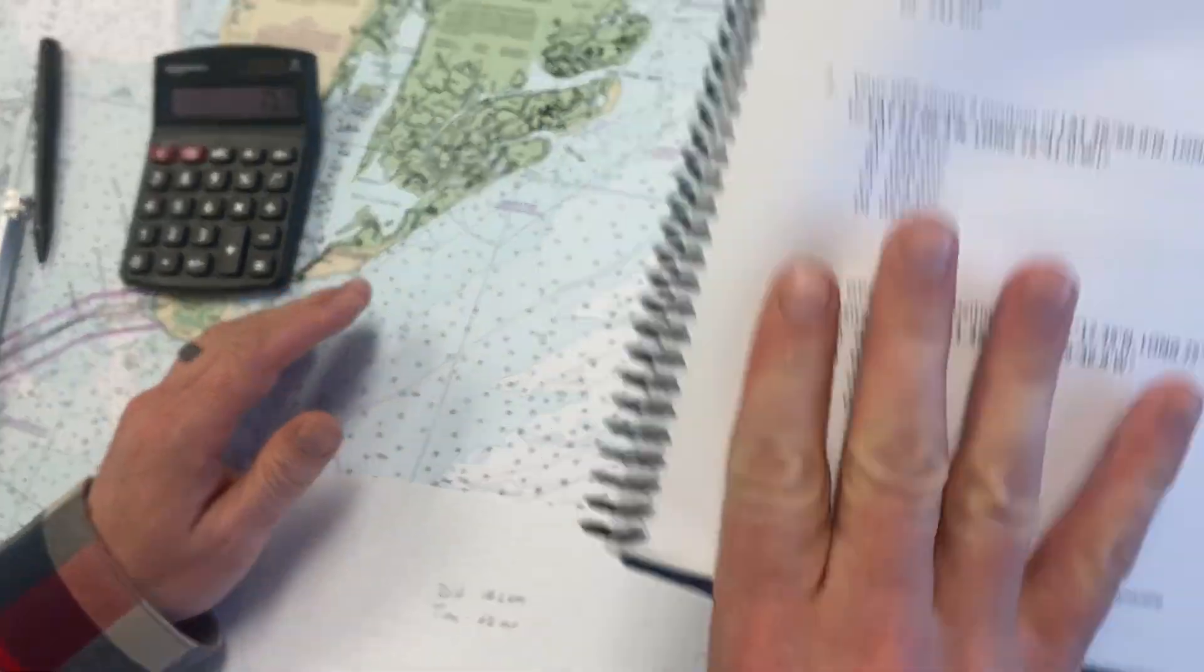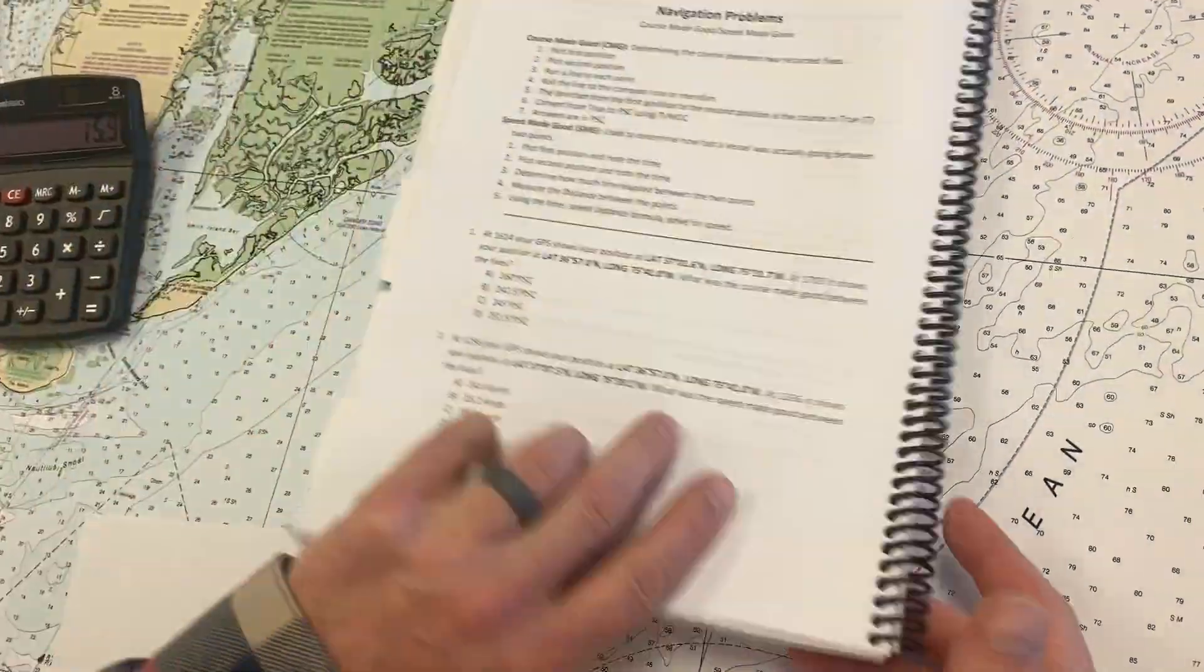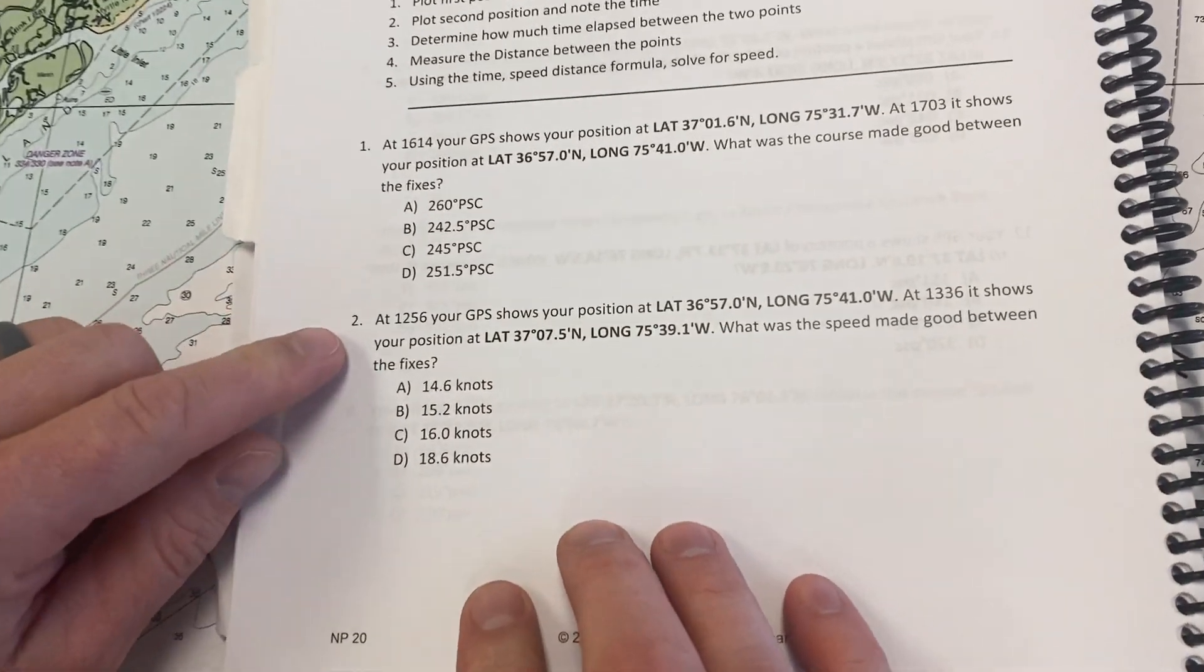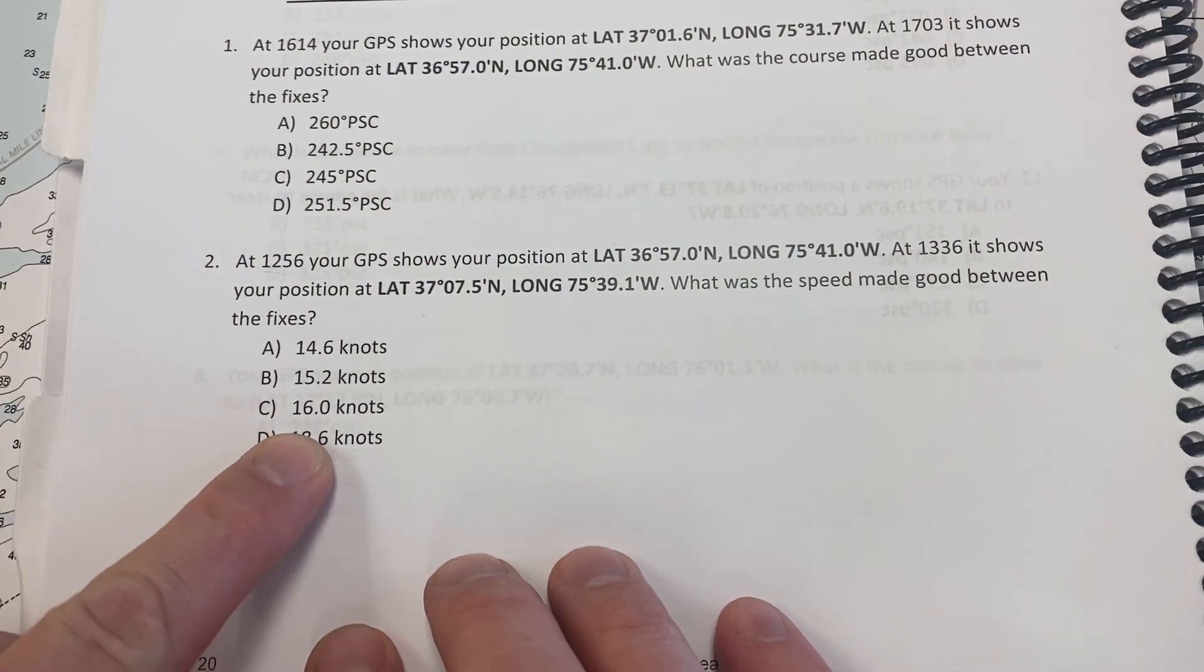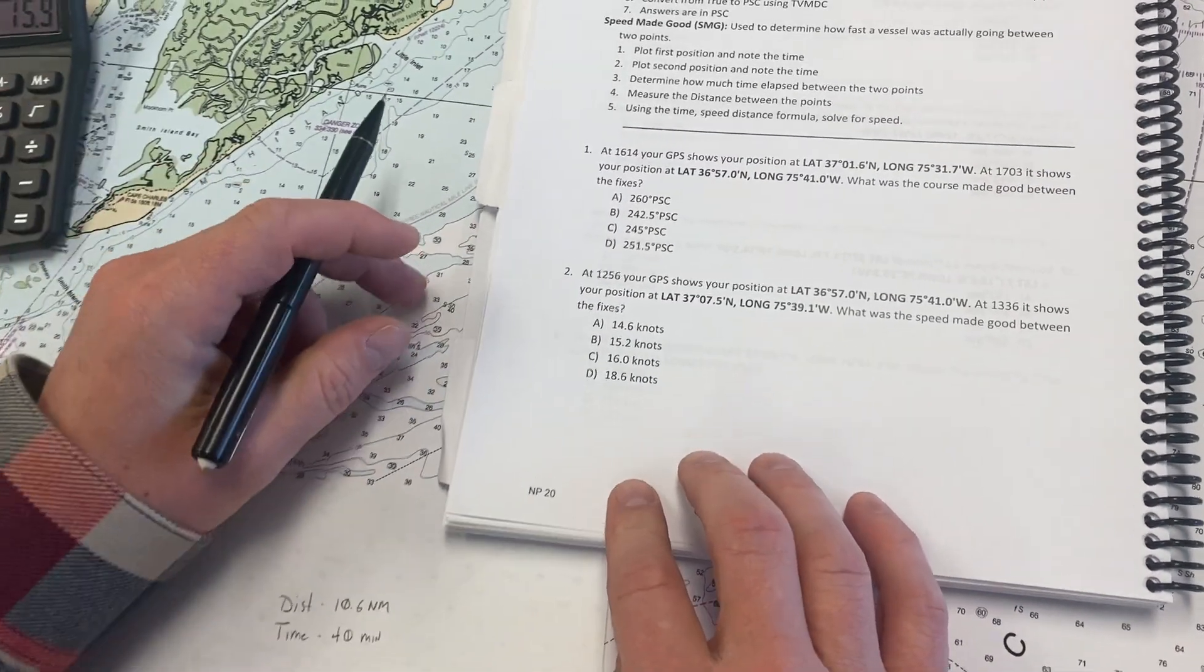Let's go back and see if any of our speed made good answers are close to that. Number two here. How about that? We've got 16 knots. We're just off of that. And that's our answer, 16 knots.